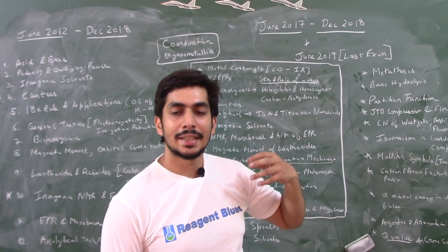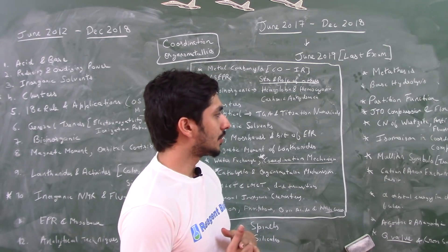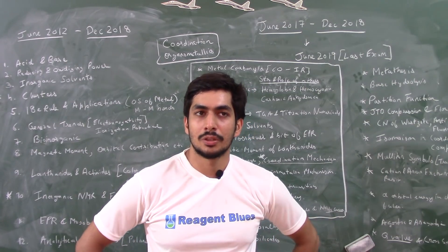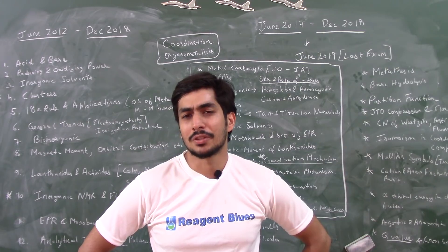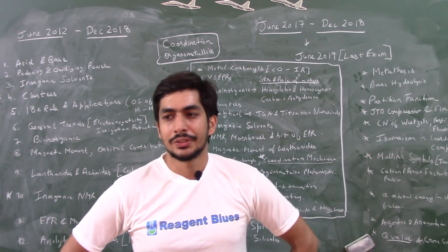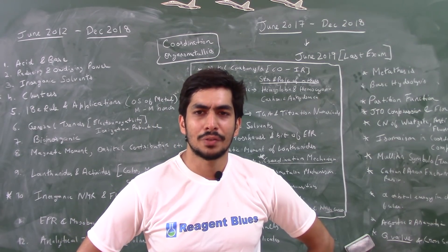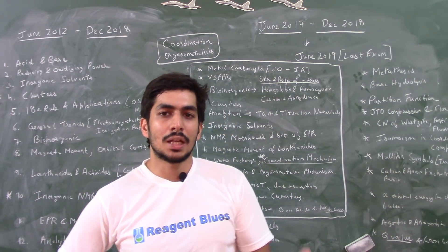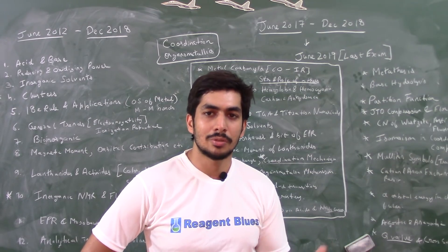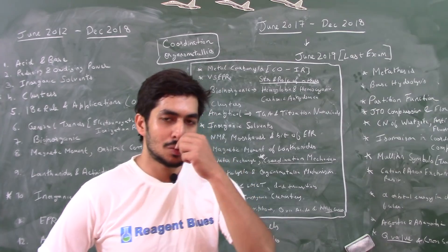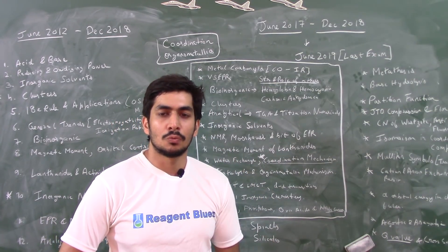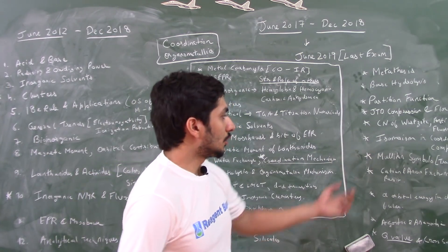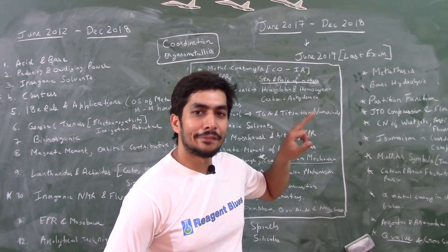Then we have coordination numbers in the wurtzite and antifluorite structures. Recently there was a question based on CaB6 asking for the coordination number of calcium if it follows the wurtzite structure. You should know what the wurtzite structure is, what the antifluorite structure is — this comes from solid state/physical chemistry but is also asked in inorganic chemistry. Have a look at the coordination numbers in wurtzite, ZnS, and antifluorite structures.